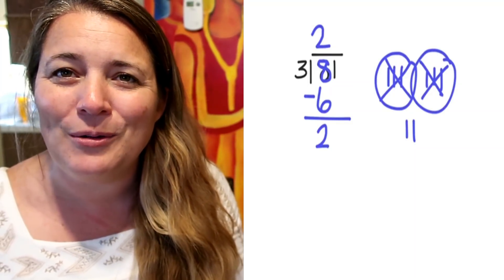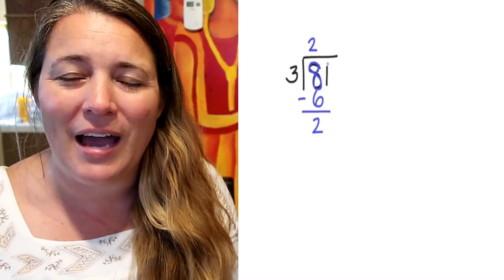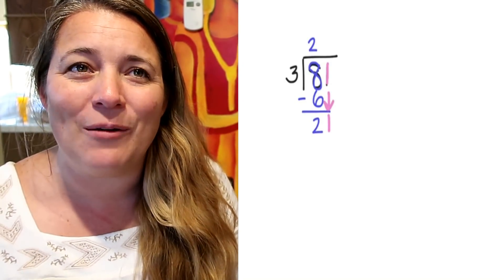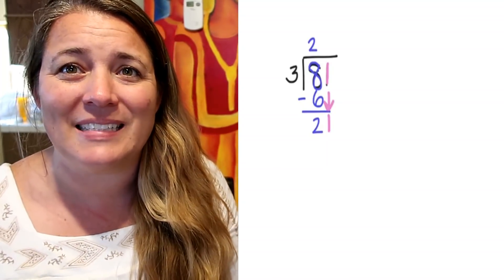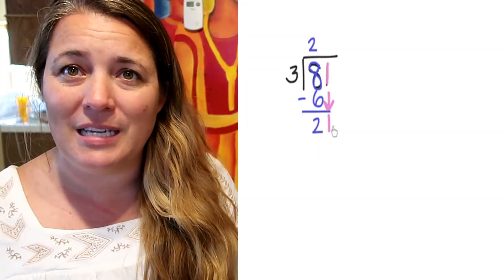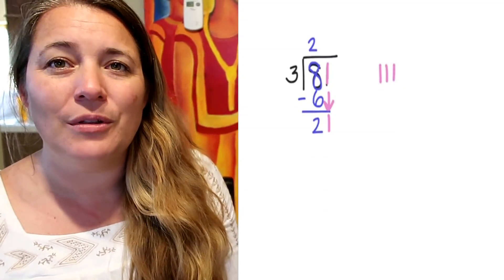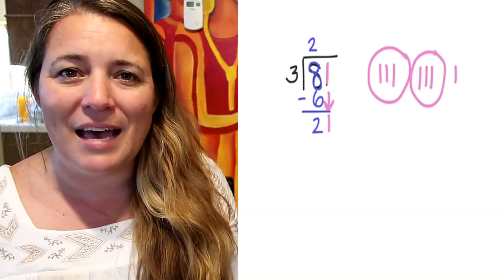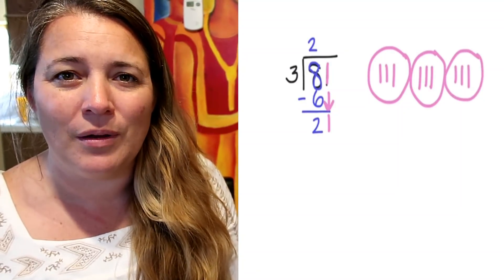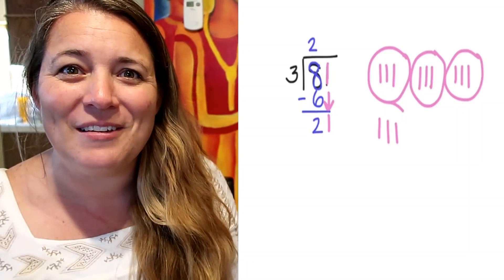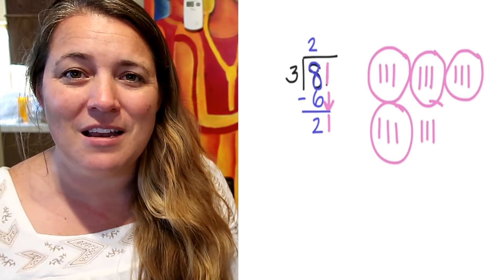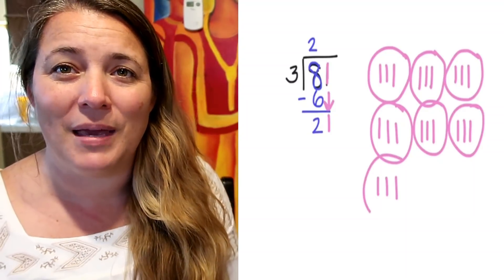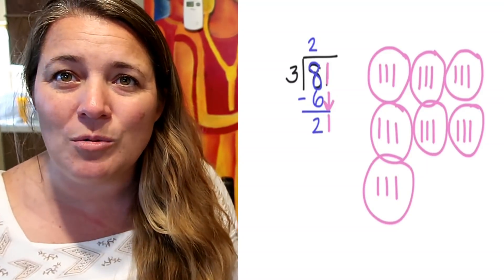The next thing is to bring down the 1. Now we see that we have 21 sticks. We're going to draw them out together: 1, 2, 3 — make a group. 4, 5, 6 — make a group. 7, 8, 9 — make a group. 10, 11, 12 — make a group. 13, 14, 15 — make a group. 16, 17, 18 — make a group. 19, 20, 21 — make a group. We've drawn all 21 of our sticks.